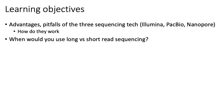The learning objectives today are to understand the advantages and disadvantages of the three main sequencing technologies that many people use today — namely Illumina, PacBio, and Nanopore — and have a broad understanding of how they work. We also want to understand when and why you would use long versus short read sequencing, since both have their own advantages and disadvantages.